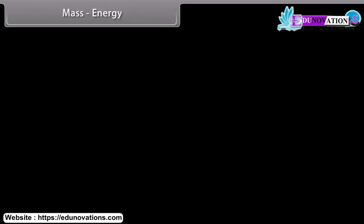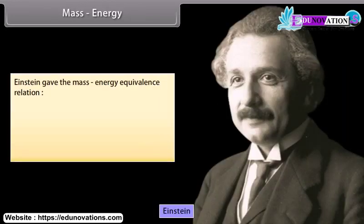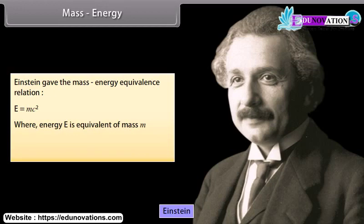Mass-energy: Einstein gave the mass-energy equivalence relation E = mc², where energy E is equivalent to mass m, and c is the velocity of light in vacuum, that is 3 × 10⁸ meters per second.